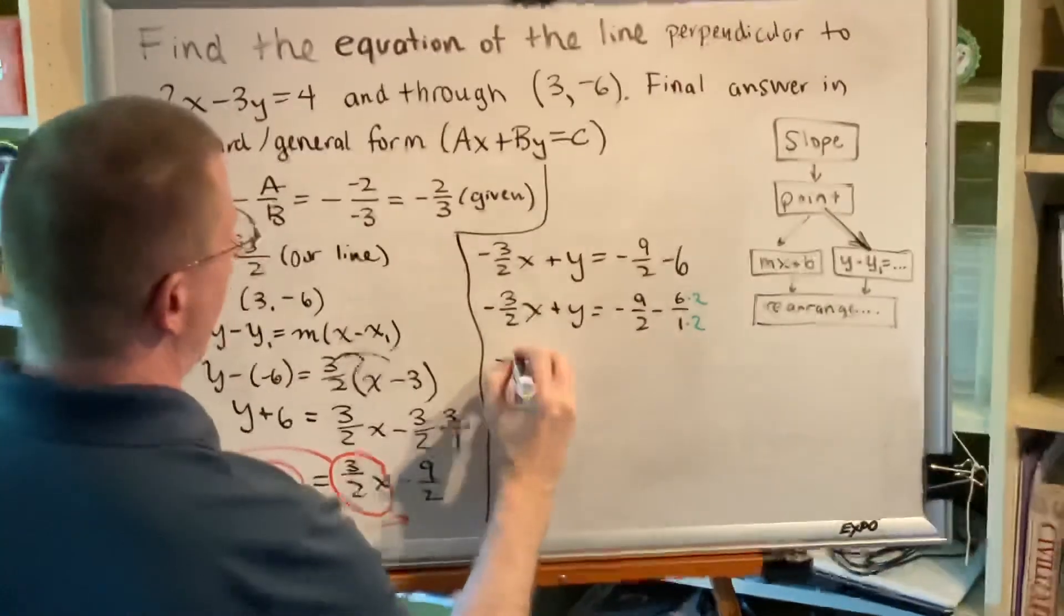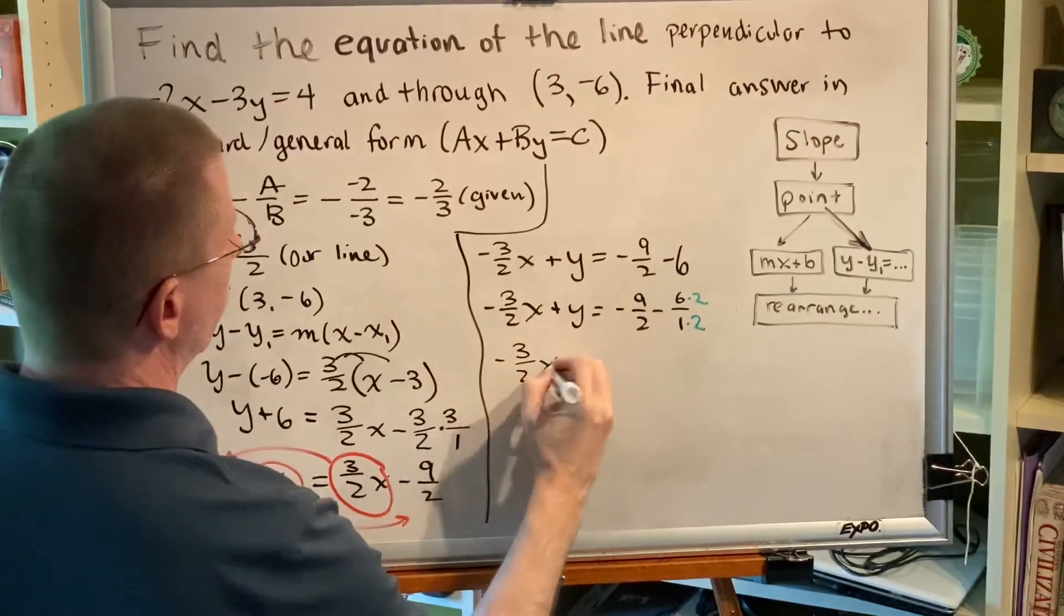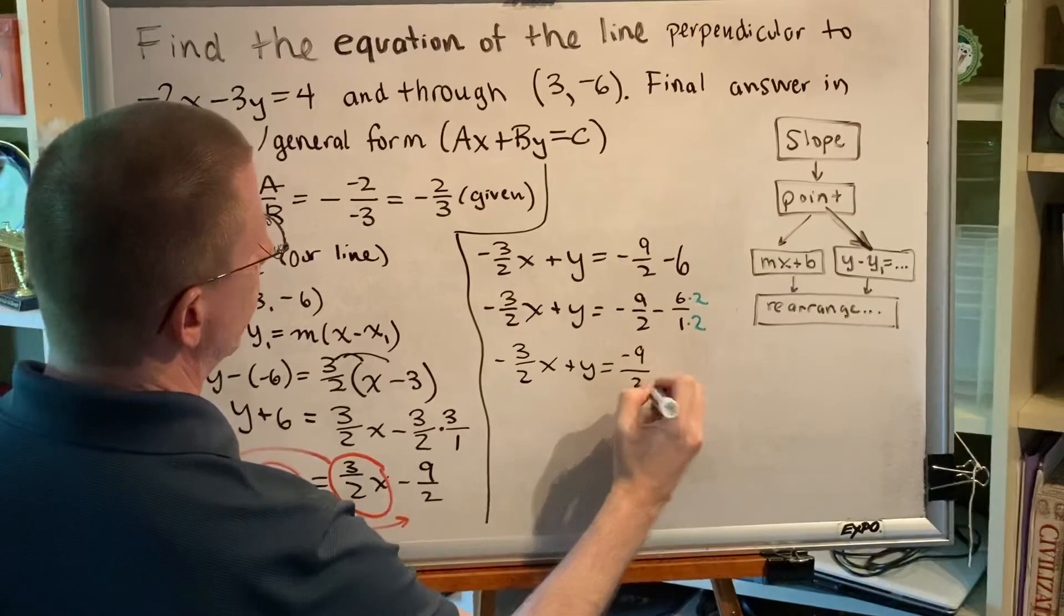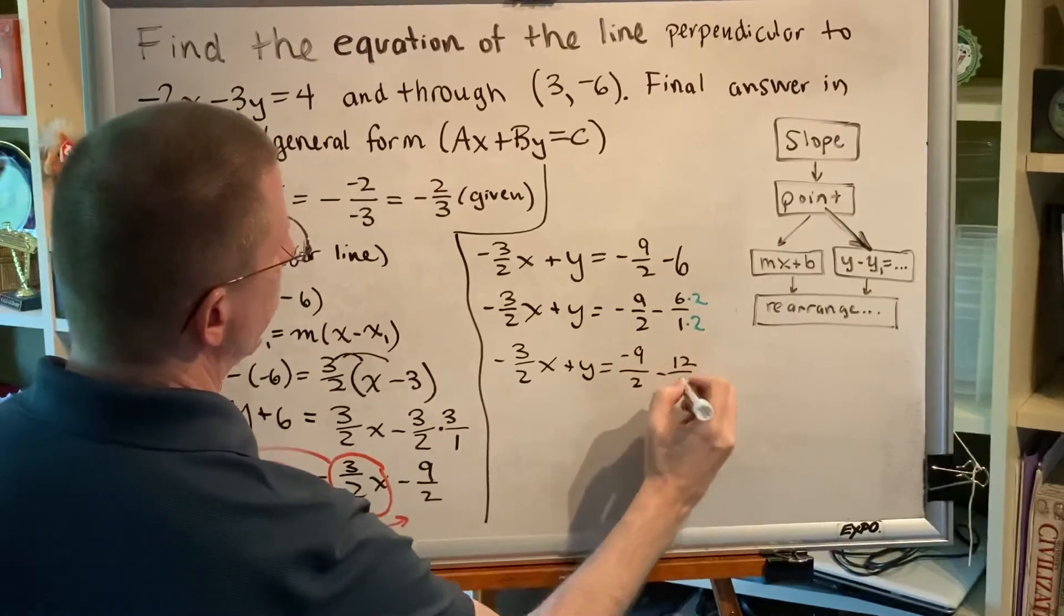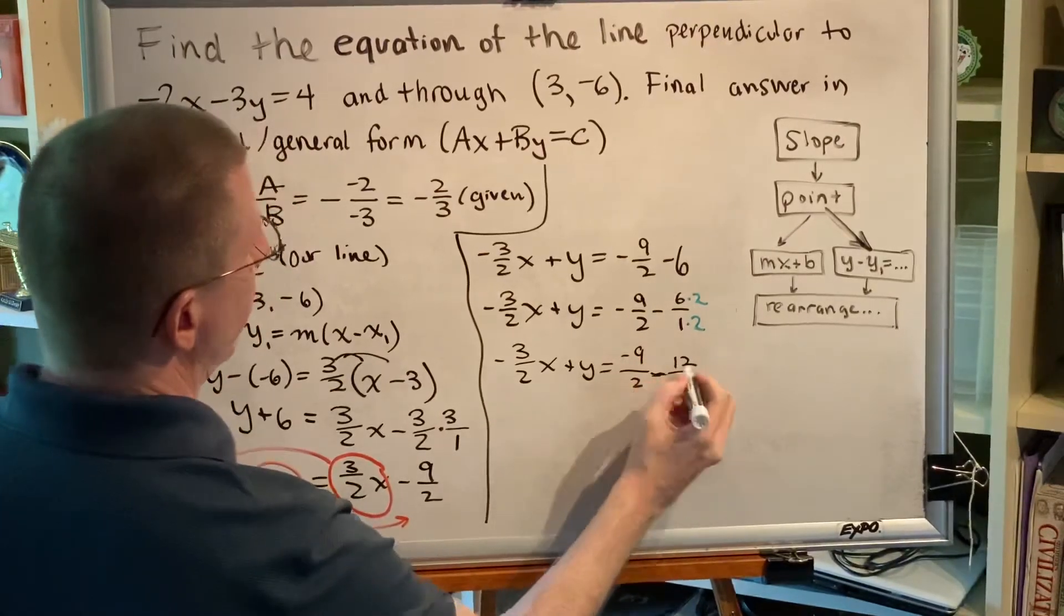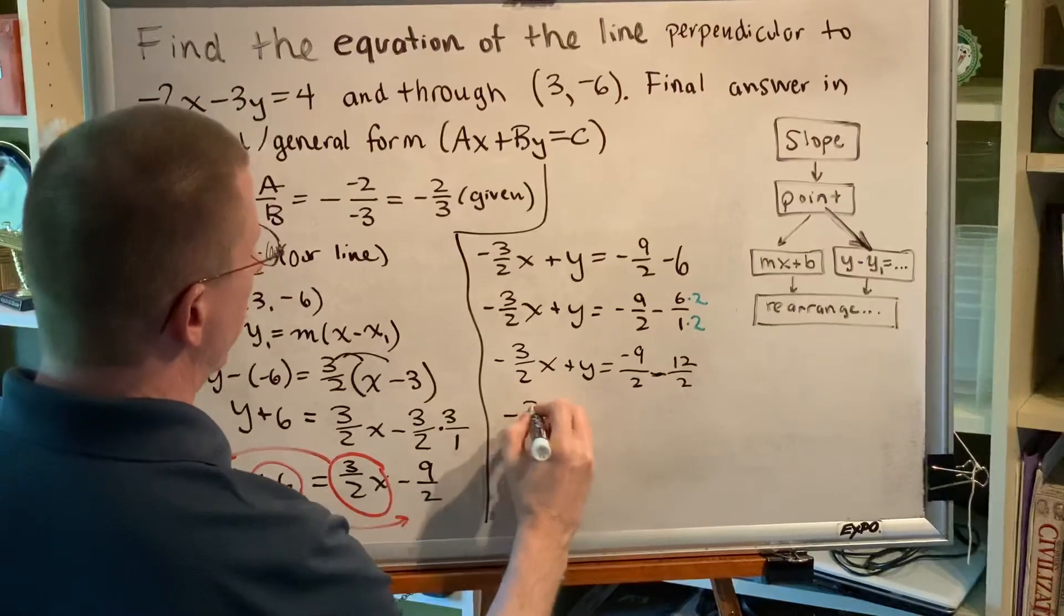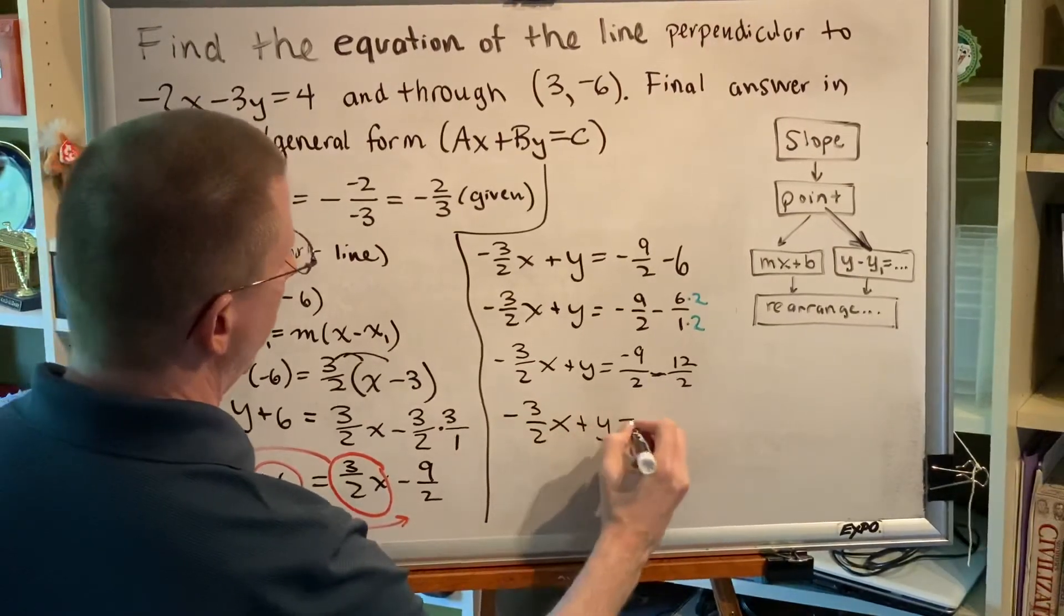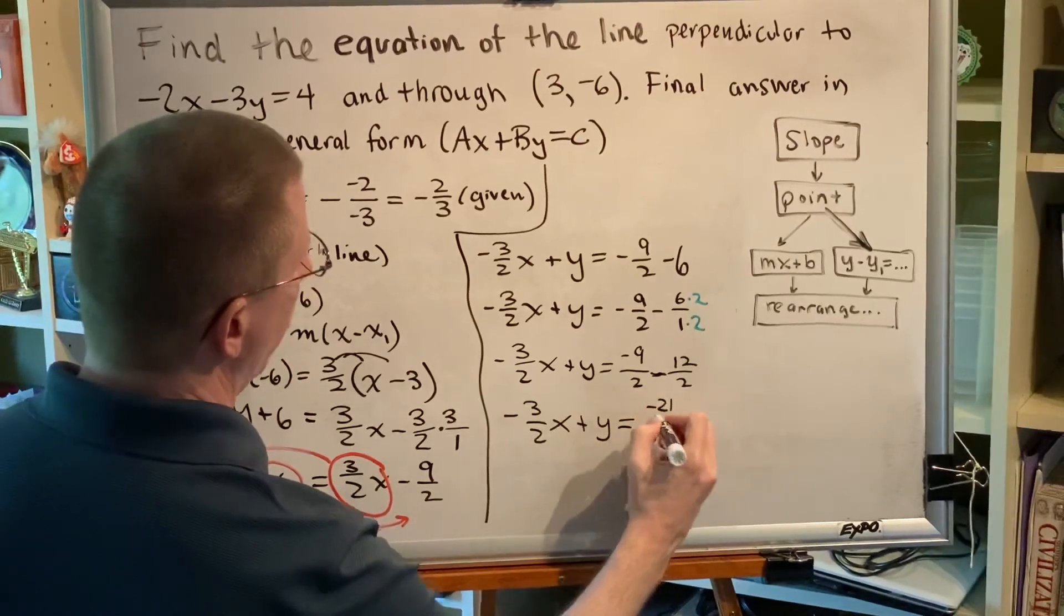So I get -3/2x + y = -9/2 - 12/2. Minus 9 minus 12 more is minus 21. So -3/2x + y = -21/2.